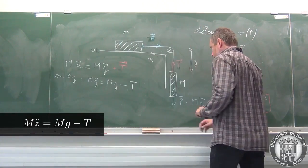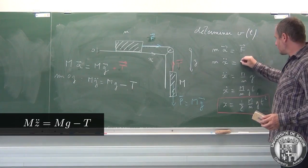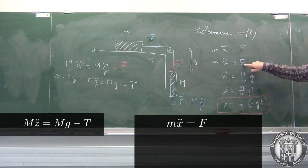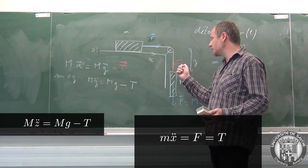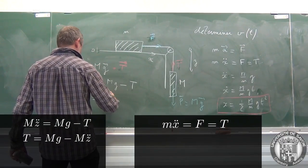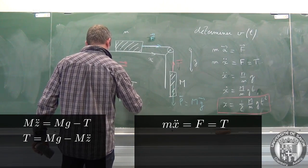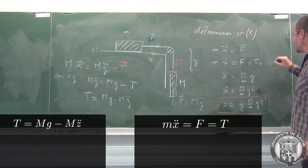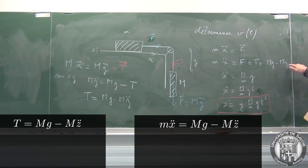Du coup, je vais reprendre le raisonnement qui est ici, en remplaçant ici F, la composante de F suivant X, par T. Et T, je peux l'exprimer en fonction des autres grandeurs. T = Mg - Mz̈, c'est-à-dire Mg - Mz̈. Donc, on voit que par rapport à tout à l'heure, on a ce terme-là en plus. Tout à l'heure, on a écrit juste ça, mais ce n'était pas correct. C'est ça qu'il faut écrire.